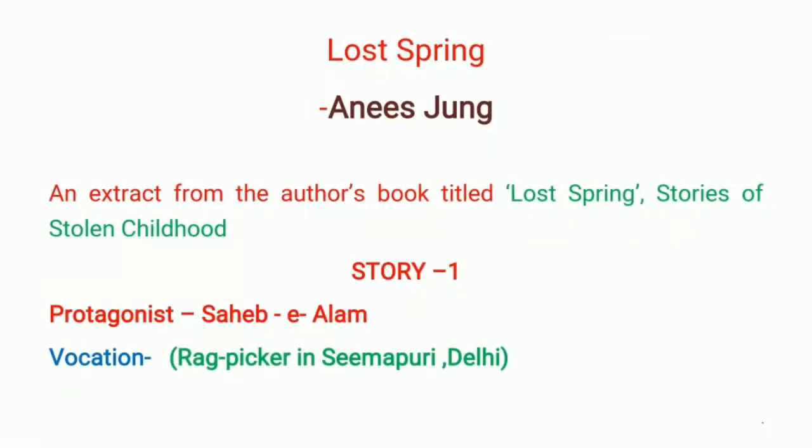Hello students. In our last class we have already started with Lost Spring, which is written by Anees Jung. In your syllabus there are two stories from this book — Lost Spring: Stories of Stolen Childhood. The first story is about Saheb-e-Alam, who is a rag picker. Basically, Saheb-e-Alam and his entire family are from Dhaka, Bangladesh. They had to migrate to India because their entire agricultural field was destroyed in a natural calamity.